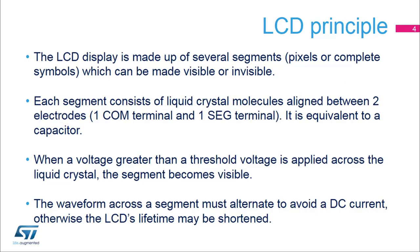The LCD display is made up of several segments, pixels, or complete symbols, which can be made visible or invisible. Each segment consists of liquid crystal modules aligned between two electrodes, one COM terminal and one SEG terminal. It is equivalent to a capacitor. When a voltage greater than a threshold voltage is applied across the liquid crystal, the segment becomes visible. The waveform across the segment must alternate to avoid a DC current, otherwise the LCD's lifetime may be shortened.